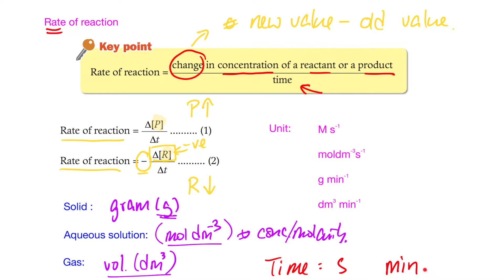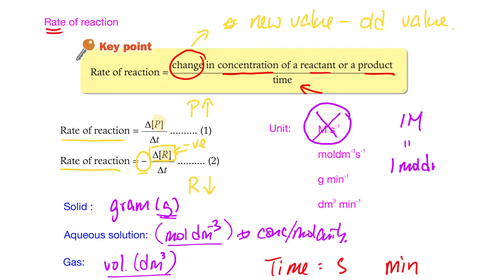So we can have units like volume per minute, gram per minute, or mol per dm³ per second. One important point: the capital letter M (molarity) per second is not acceptable. Capital M means one mol per dm³ and is a specific unit for concentration of solutions only — you cannot use it as a rate unit on its own. We only accept mol per dm³ per second. Bear this in mind when writing rate of reaction units.